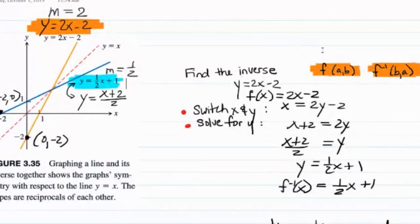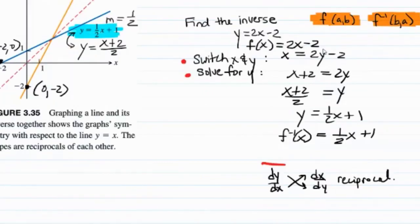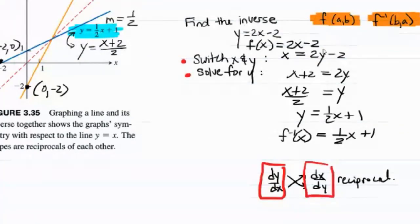Derivatives are a ratio, the change in y over the change in x. They're a fraction. If the slope of the original function is dy over dx and then we switch all the x's and y's, what happens? We flip or get the reciprocal of the fraction.